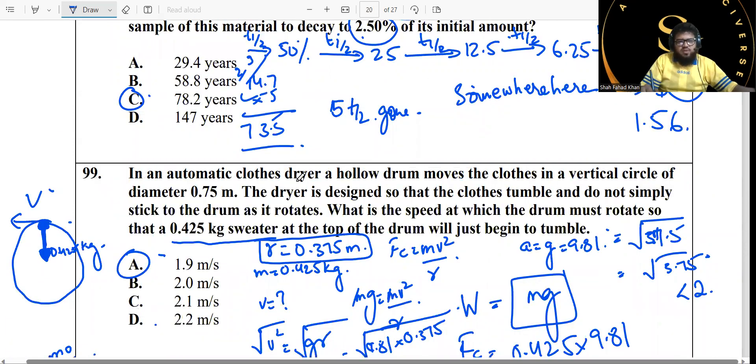Question 99: in an automatic clothes dryer, you have this stuff going on, you have a vertical circle. The dryer is designed so that the clothes tumble and do not simply stick to the drum as it rotates. What is the speed when the drum must rotate when this much kg sweater at the top of the drum will just begin to tumble?